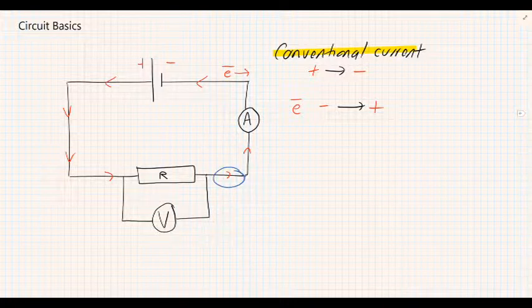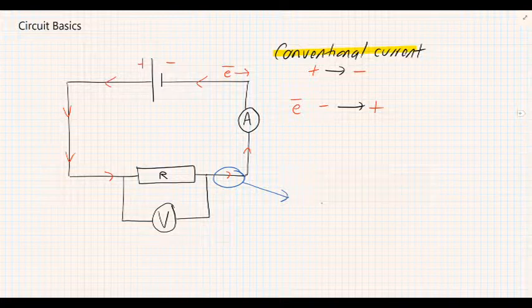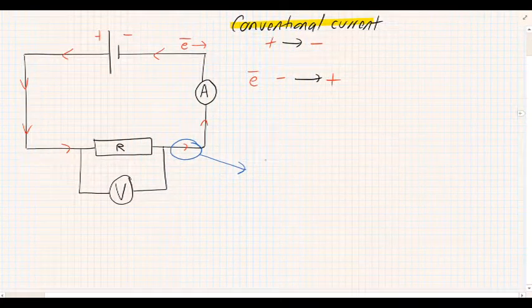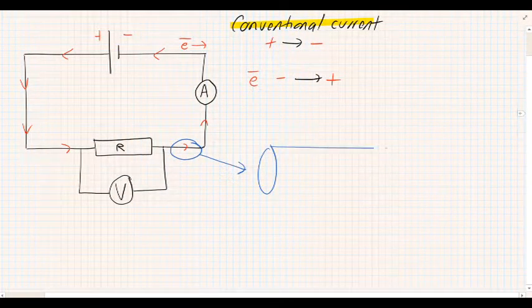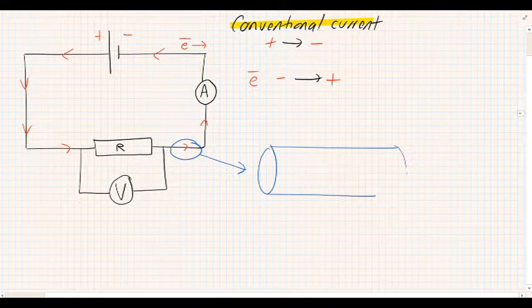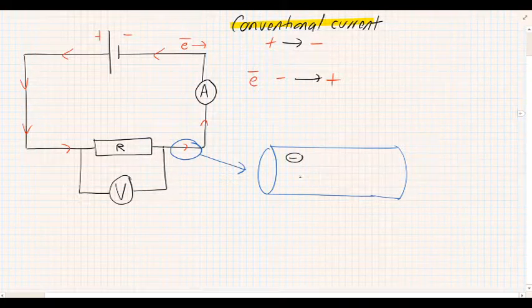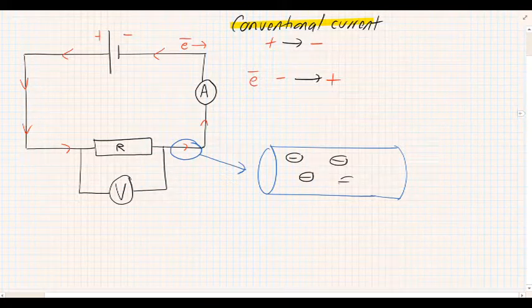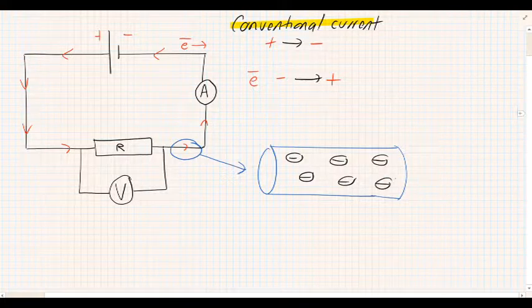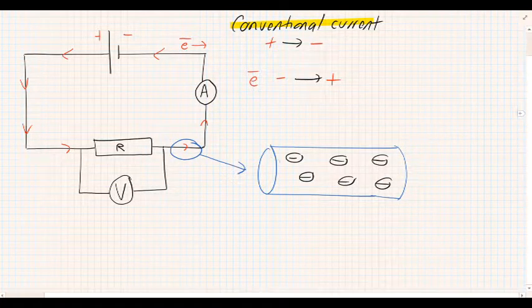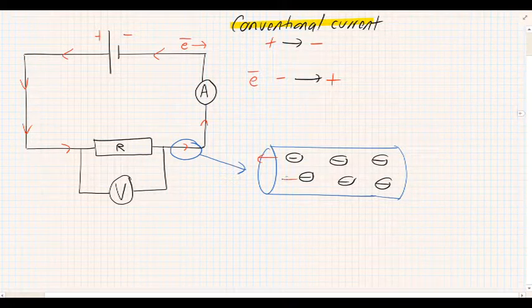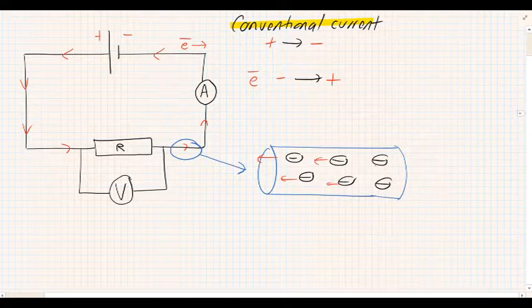We're having a look to see what the electrons are actually doing. Over here we have a little cross section of the wire, and inside the wire we've got a bunch of electrons. Those electrons are busy flowing towards the positive terminal of the battery.